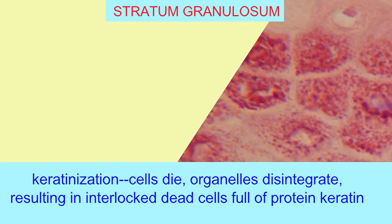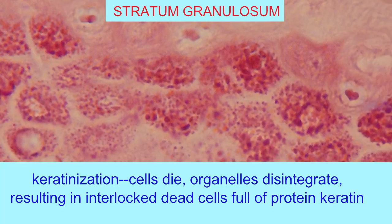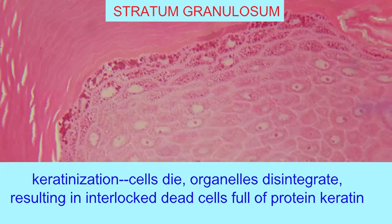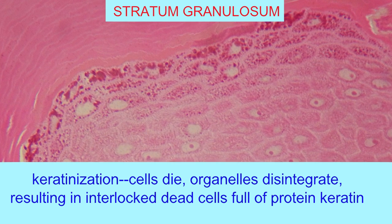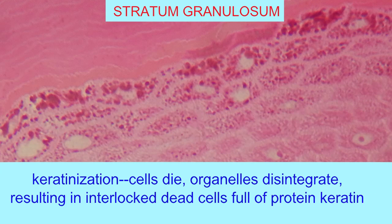Because these cells are now too far from the blood vessels in the dermis, which give them oxygen, glucose, and nutrients, they begin to die, undergoing the process of keratinization. Their organelles disintegrate, resulting in interlocked dead cells full of the protein keratin.